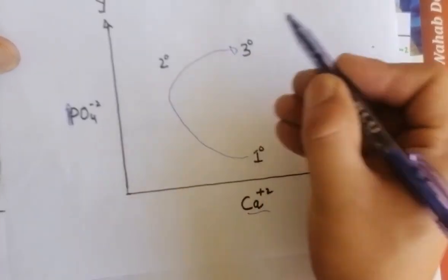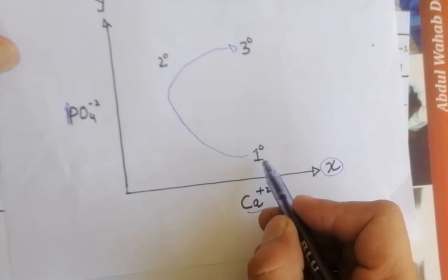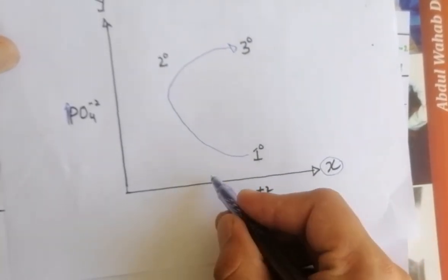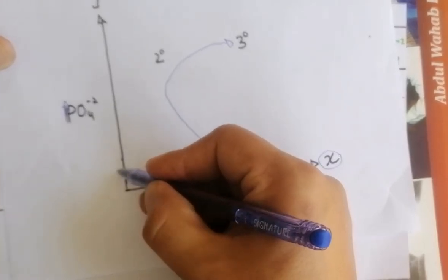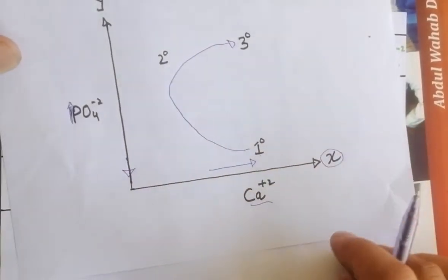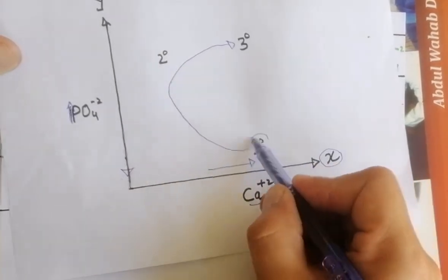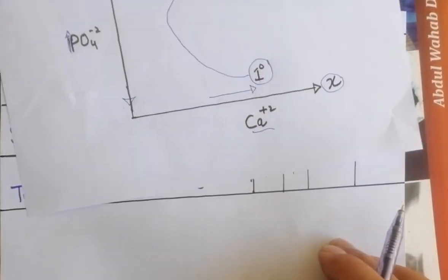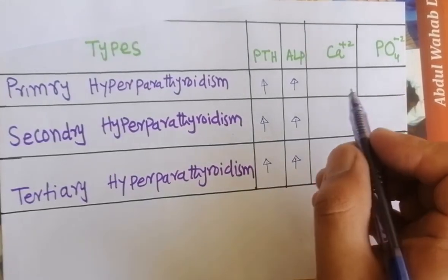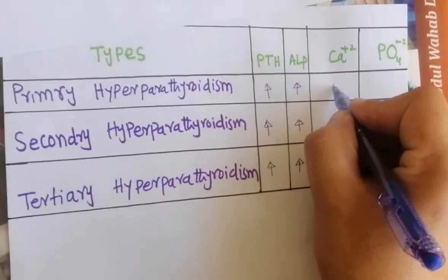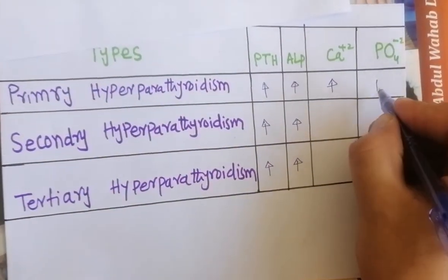In first degree or primary hyperparathyroidism, calcium level is increased while phosphate level is low. So calcium is increased and phosphate is decreased — this is for primary hyperparathyroidism.